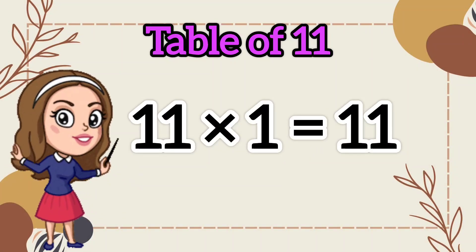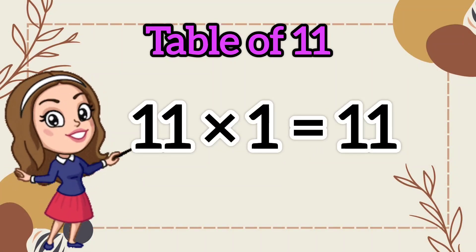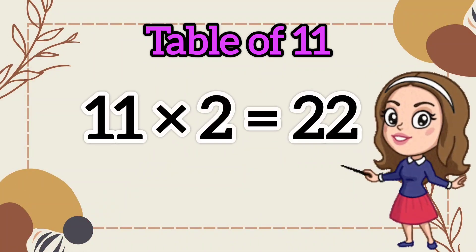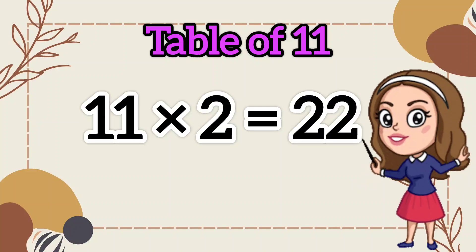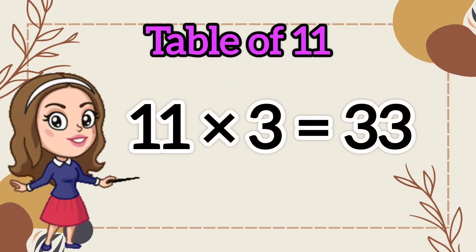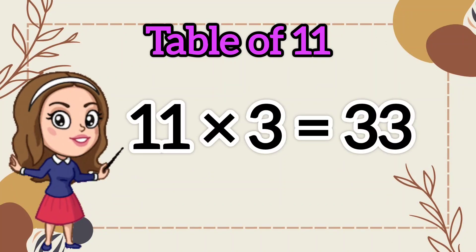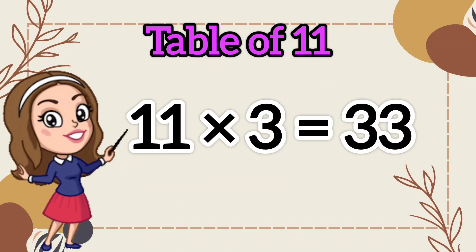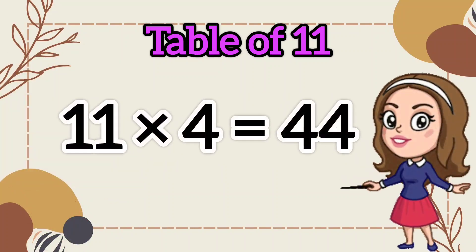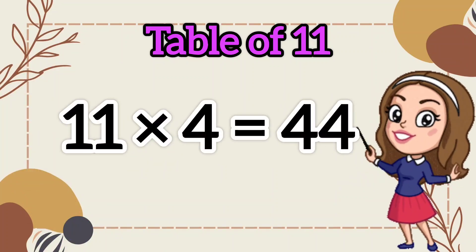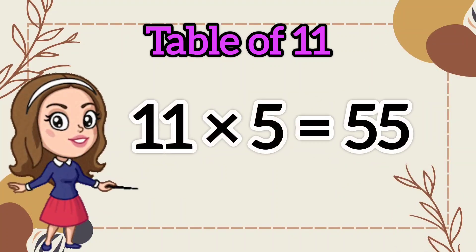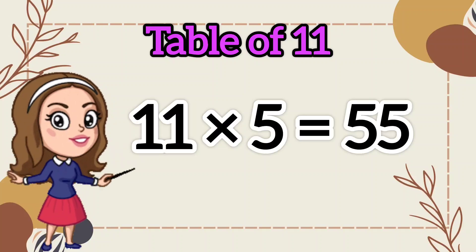11 ones are 11. 11 twos are 22. 11 threes are 33. 11 fours are 44. 11 fives are 55.